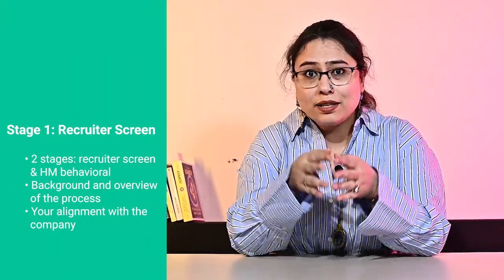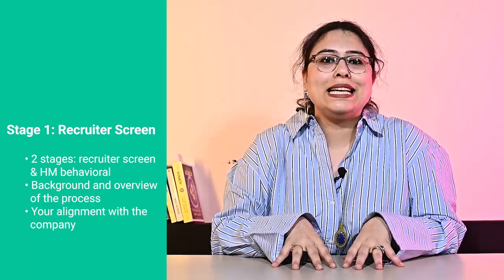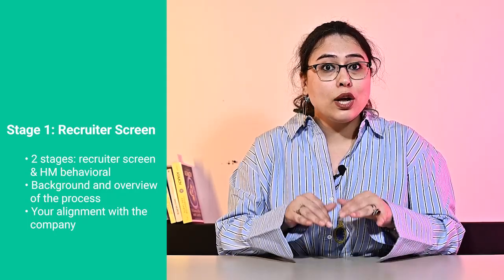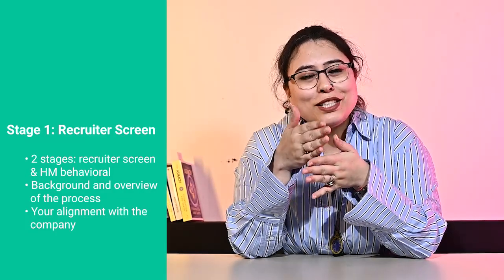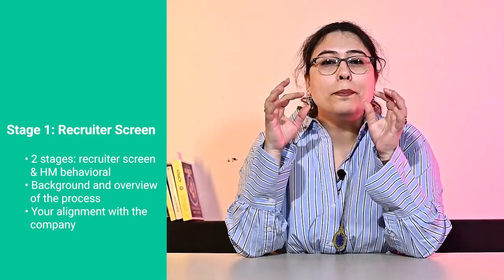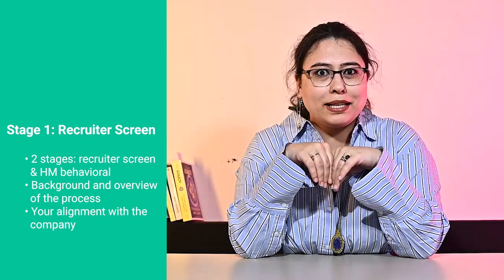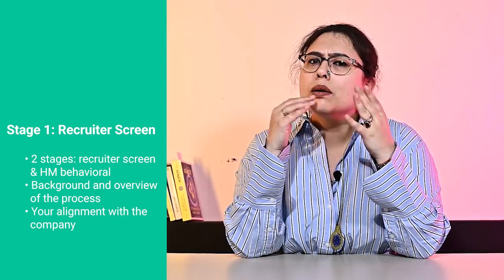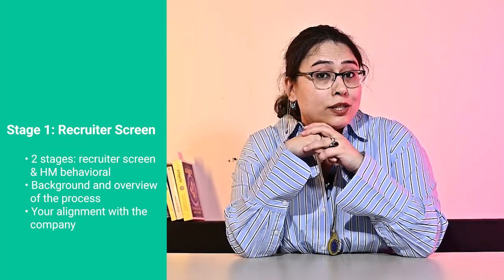Let's talk about step one first — the recruiter or phone screening. This stage is divided into two rounds: a recruiter screen and a behavioural interview with the hiring manager. The recruiter screen is the initial screening stage where the recruiter will ask general questions about your background and provide an overview of the interview process. In the hiring manager behavioural interview, the manager will ask questions about why you are interested in this company and what you are looking for in your next role. The manager will also talk about their background, the history of the team, and the current needs of the team.